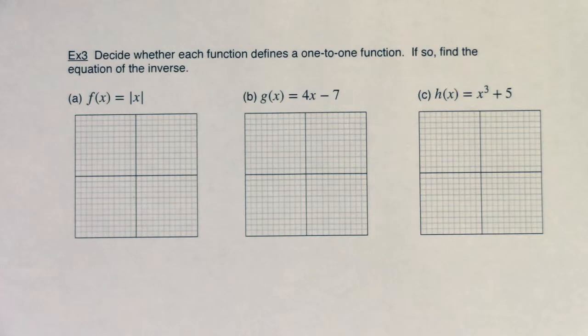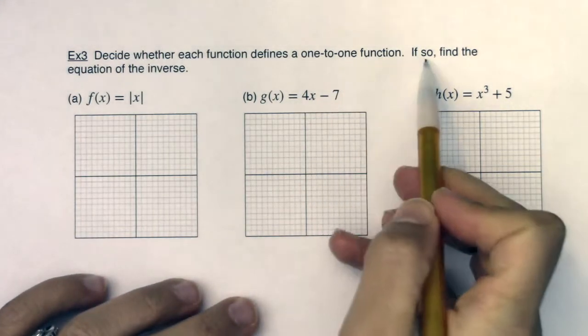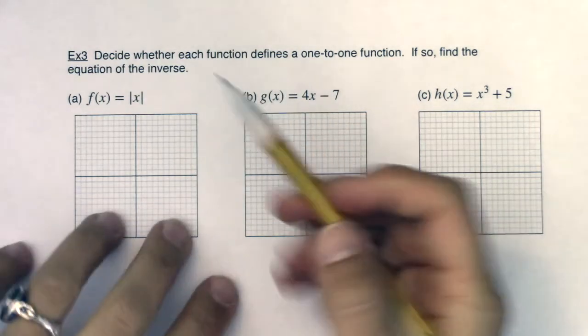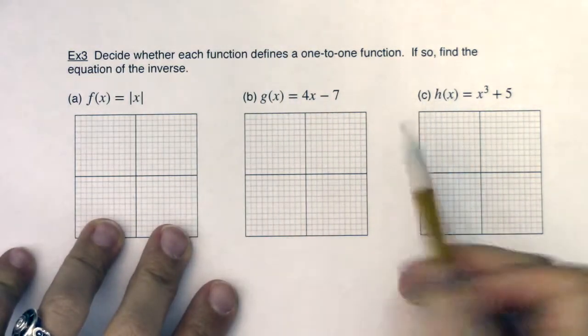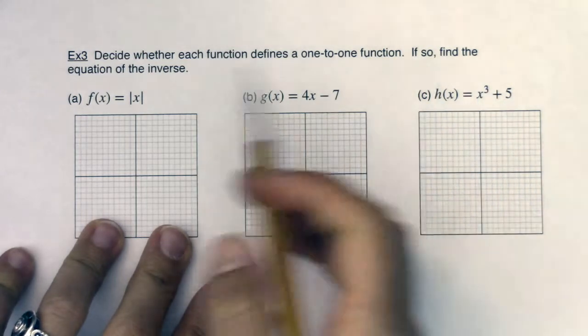Hey Math 31, let's take a look at these three functions I have asked you to graph. We are going to decide whether each function defines a one-to-one function. If it does, then we'll go find the equation of its inverse. So each of these are parts of toolkit functions, maybe not x cubed so much, but we can make that one happen.